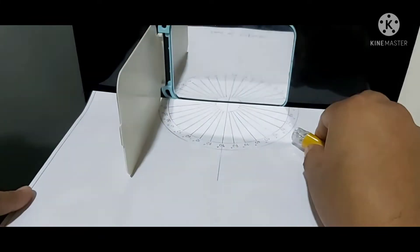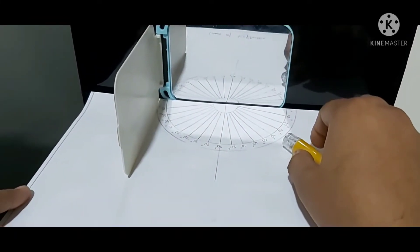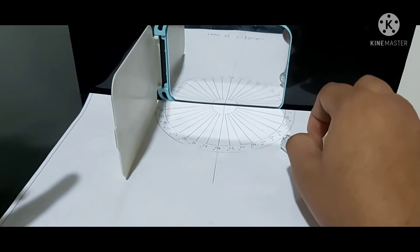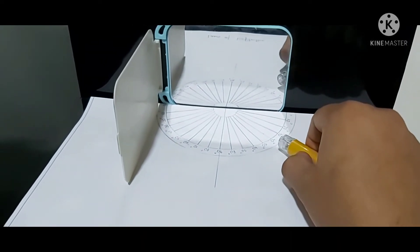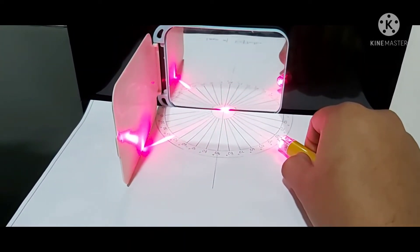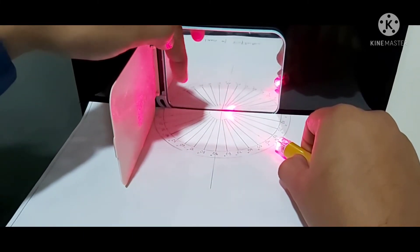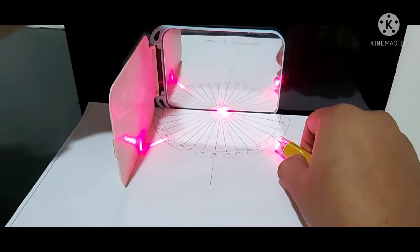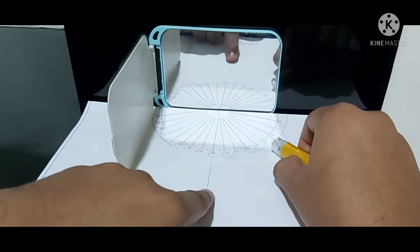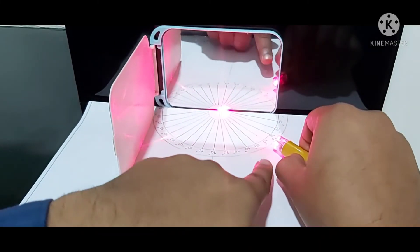Here at 40 degrees, the angle of incidence is equal to angle of reflection. This is the incident ray which I am focusing, this is the reflected ray, and this is the normal.